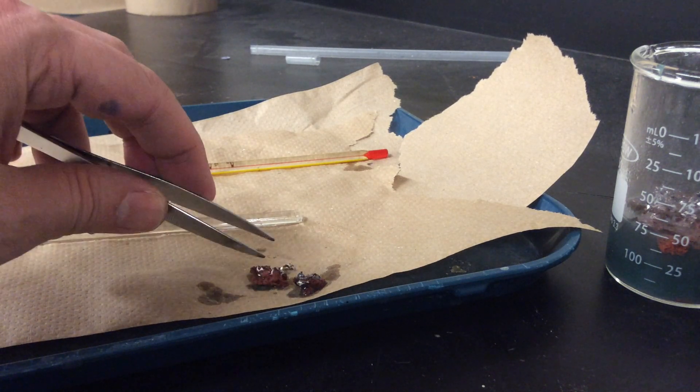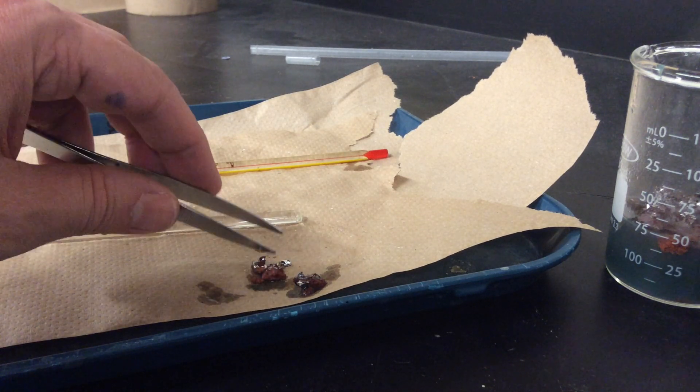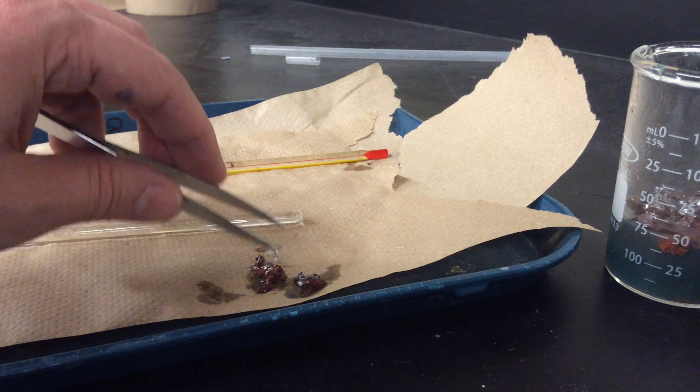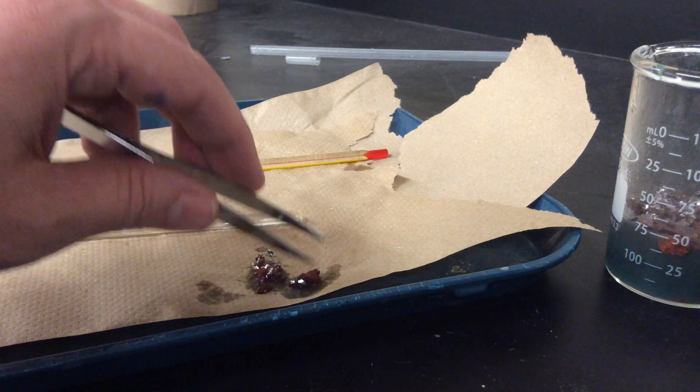But the red material is kind of powdery, kind of squishy, certainly not bendable like the aluminum foil, and kind of separates pretty easily.